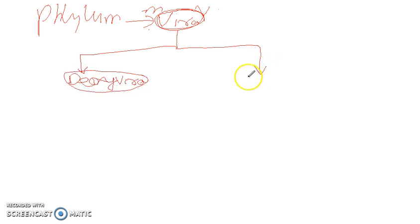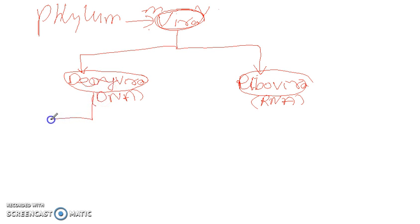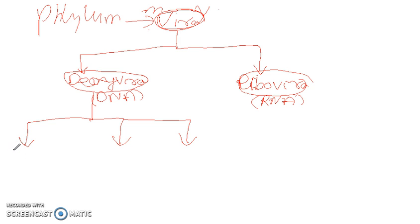The other one is called Ribovira, having RNA as its genetic material. Here we find that Deoxyvira has DNA as its genetic material. Again, this Deoxyvira is classified into three classes — class one, class two, and class three — on the basis of the shape of the capsid.